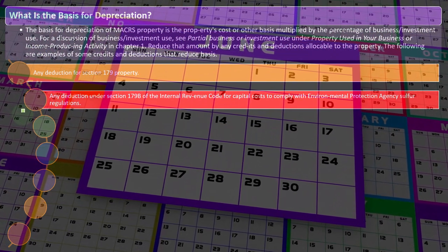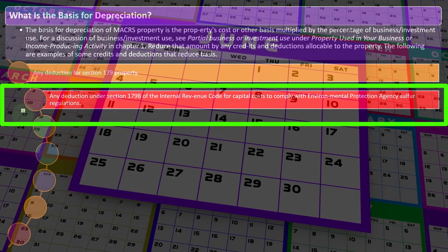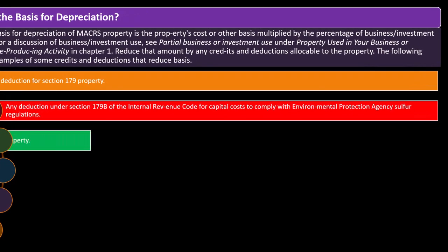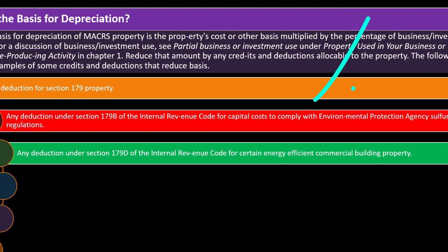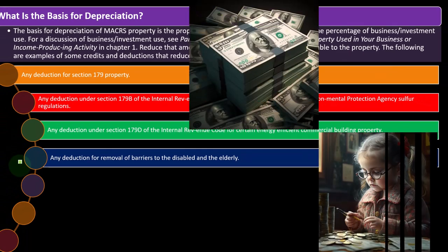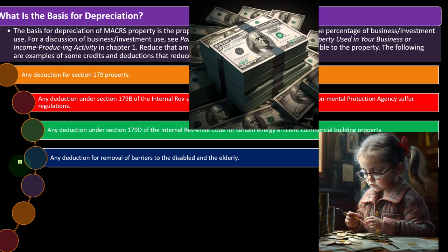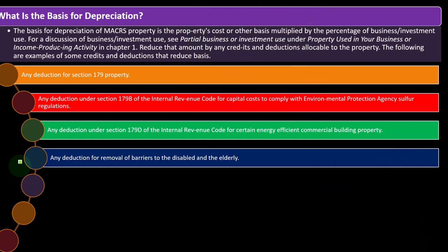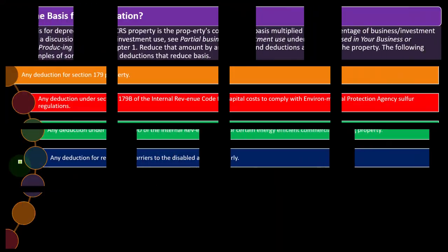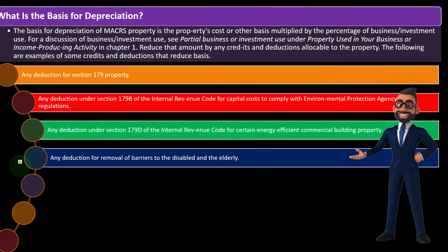Any deduction under Section 179B of the Internal Revenue Code for capital costs to comply with Environmental Protection Agency sulfur regulations follows a similar concept. Any deduction under Section 179D of the Internal Revenue Code for certain energy-efficient commercial building property is a similar situation. Also, any deduction for removal of barriers to the disabled and the elderly — if you get a credit from doing it, you've already received a kind of benefit, and also getting the expense could be considered double-dipping.